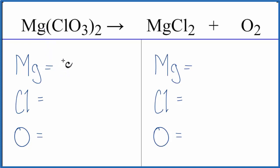We have one magnesium atom, and then this two applies to everything in the parentheses, so we have one chlorine times the two, there's two chlorines, and then we have the three oxygens times the two, we have six oxygens.